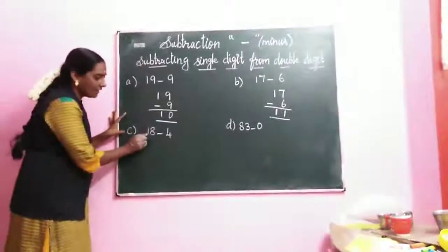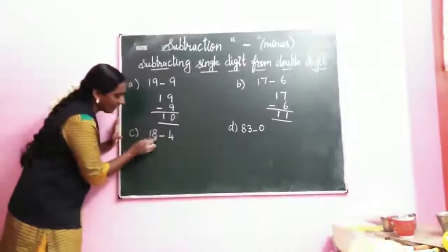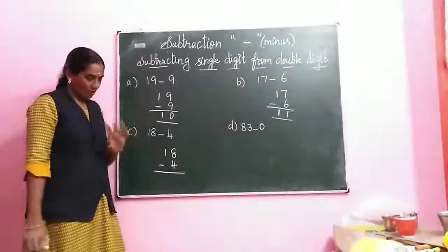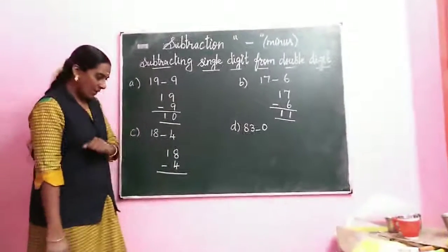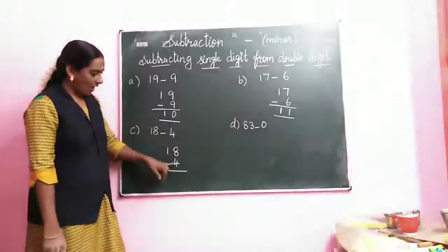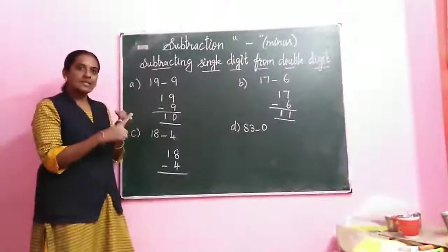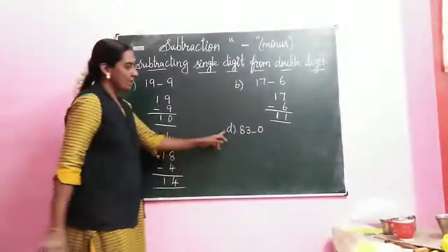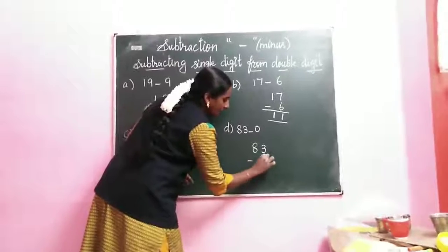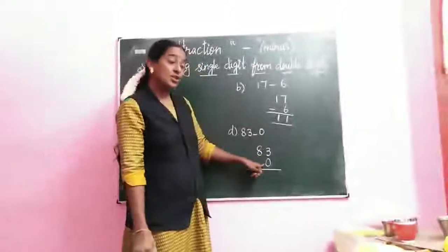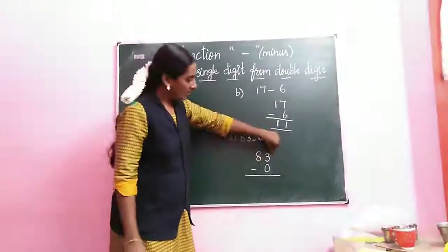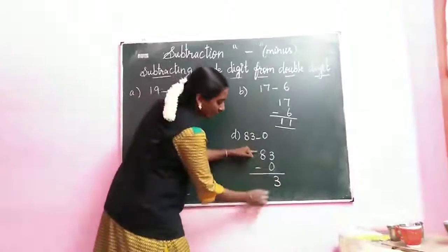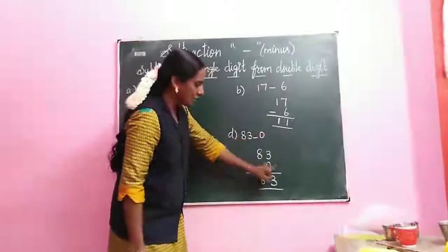Next sum: 18 minus 4. Take the down number 4; count after 4 — 5, 6, 7, 8 — stop at 8. How many fingers? 4. Bring down the tens digit 1. So 18 minus 4 equals 14. Next sum: 83 minus 0. In the ones place, we have 0 — when we subtract 0 from any number, the answer is the same number, so write 3. Then bring down 8. So 83 minus 0 equals 83.